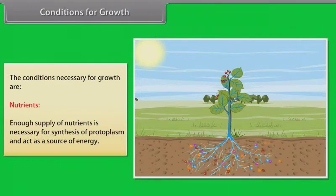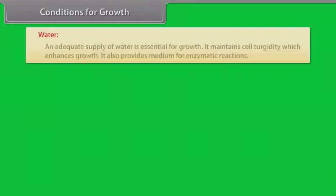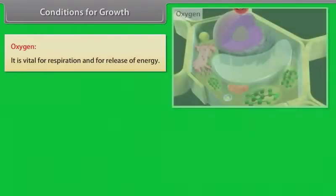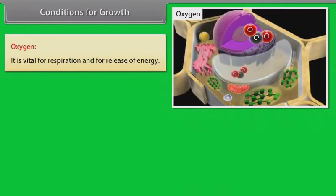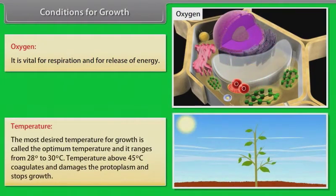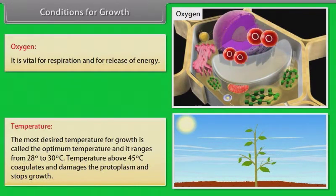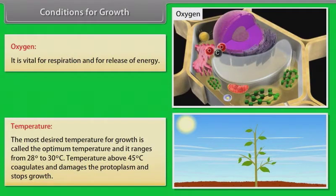Conditions for growth. The conditions necessary for growth are: Nutrients - enough supply of nutrients is necessary for synthesis of protoplasm and act as a source of energy. Water - an adequate supply of water is essential for growth. It maintains cell turgidity which enhances growth. It also provides medium for enzymatic reactions. Oxygen - it is vital for respiration and for release of energy. Temperature - the most desired temperature for growth is called the optimum temperature and it ranges from 28 to 30 degrees Celsius. Temperature above 45 degrees Celsius coagulates and damages the protoplasm and stops growth.